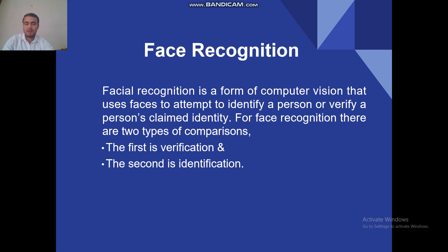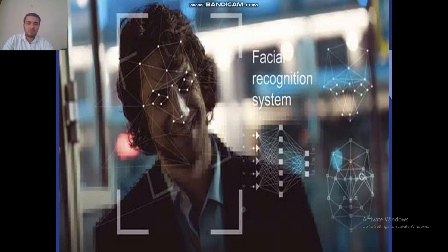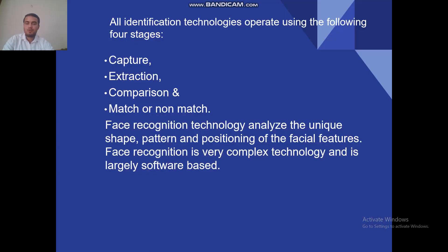These are the two basic comparisons of face recognition. Like we are seeing in this picture, first it will verify you and then it will identify you. This is an example of a face recognition system showing how it works — it will find various features on your face and according to this it will recognize you. All identification technologies operate using the following four stages: first is capture, second is extraction, third is comparison, and last is match or not match. First it will capture your image, then in extraction it will extract the important features of your face and remove the noise to give higher accuracy.